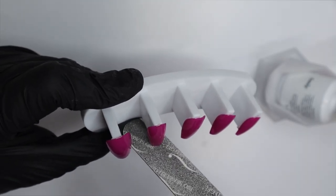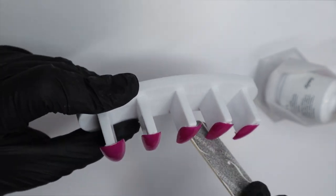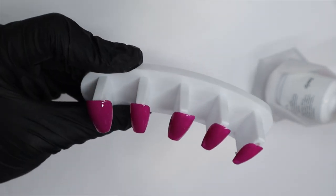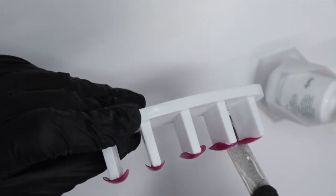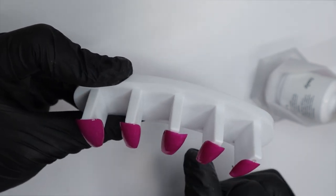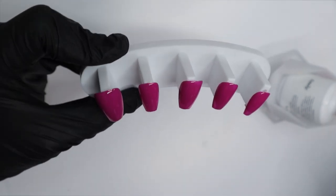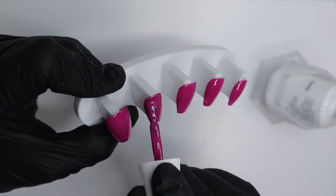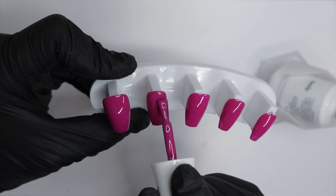I noticed that on the pointer finger right here, I didn't get the frayed edge super smooth when I was filing the tippy tabs off. So I'm just filing that now just to make sure it's nice and smooth before I apply the second coat. So while I'm doing this, I want to talk a little bit about why I started doing press on nails.